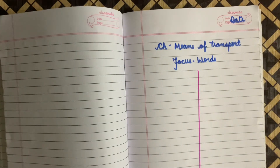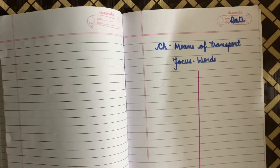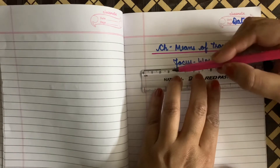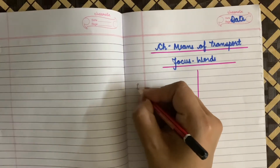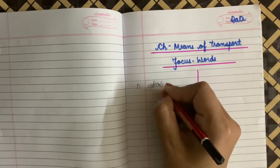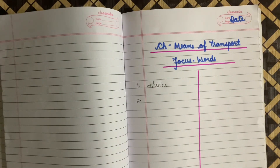Take a sharpened pencil. We will write down the focus words neatly in the notebook. You all have to write along with me neatly. Underline the headings with a scale. The first word is Vehicles. V-E-H-I-C-L-E-S, Vehicles.